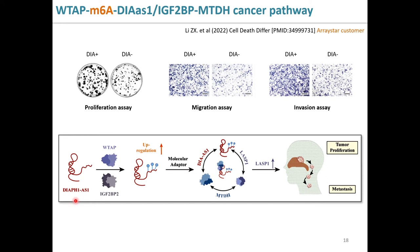The functions of DLP1-S1 in cell proliferation, cancer cell migration, and cancer cell invasion were established by proliferation, transwell migration, and transwell invasion assays. That is, LINC-DLP1-S1 is M6A modified by WTAP, stabilized by IGF2BP2, and its expression level upregulated. LINC-DLP1-S1 then binds MTDH, which recruits oncogenic and metastatic protein LASP1, causing tumor growth and metastasis.